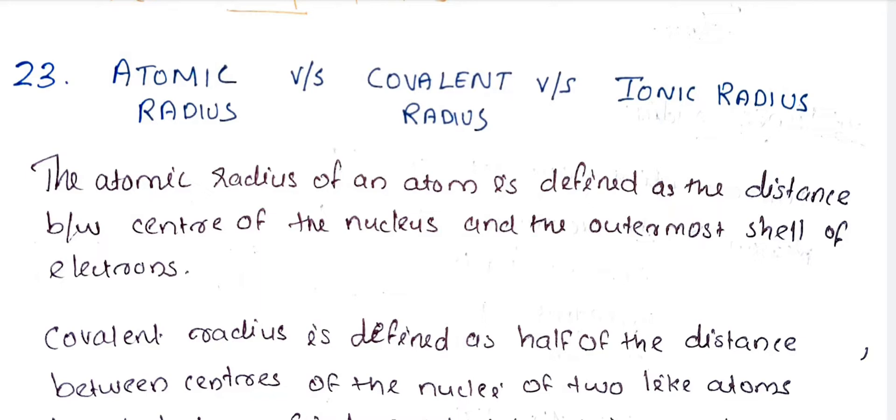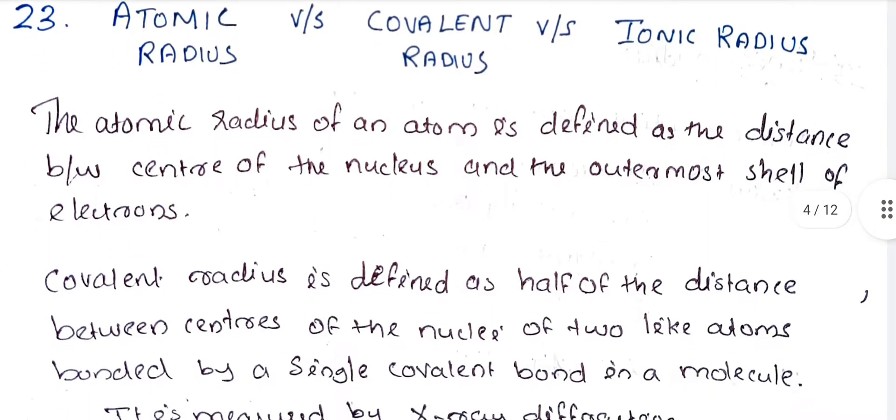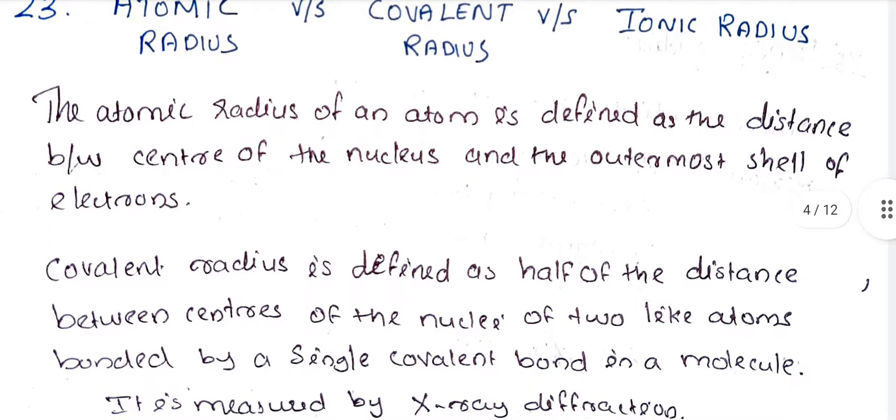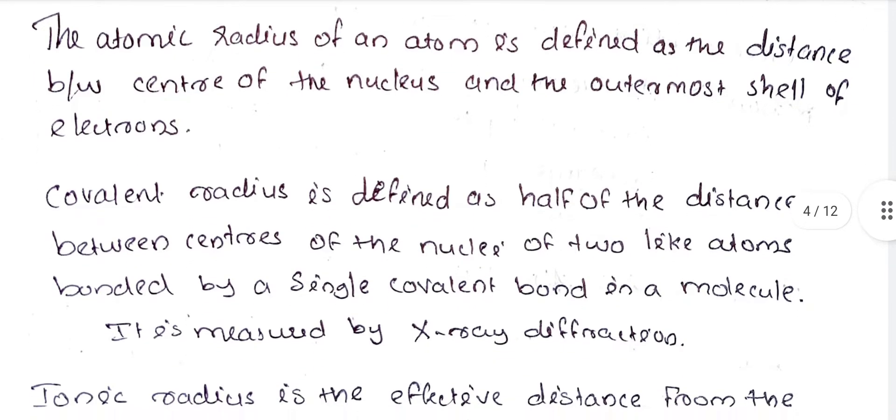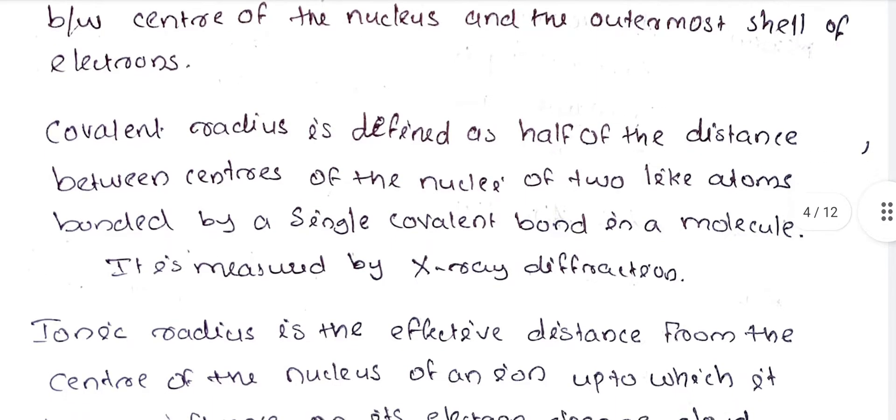We are going to discuss atomic radius and covalent radius. The atomic radius of an atom is defined as the distance between center of the nucleus and the outermost shell of electrons. Covalent radius is defined as half the distance between centers of the nuclei of two like atoms.